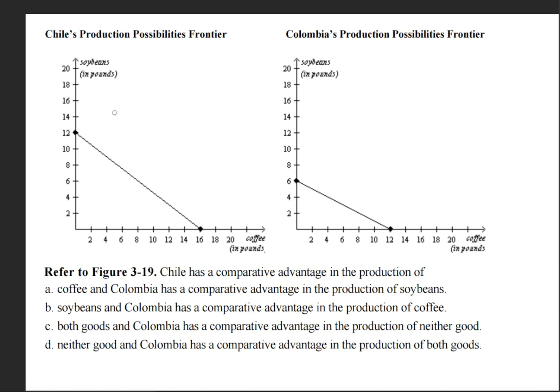So what we do next is we set up two ratios here. We have 12 pounds of soybeans to 16 pounds of coffee. Over here we would have 6 pounds of soybeans and 12 pounds of coffee.